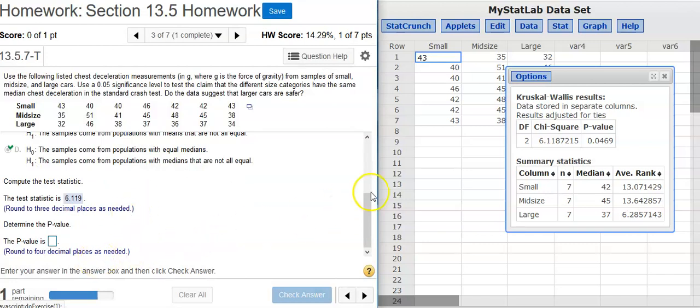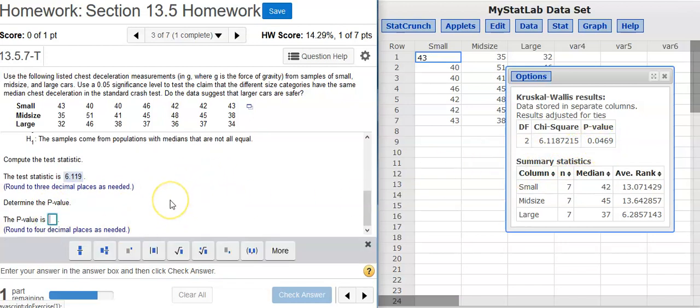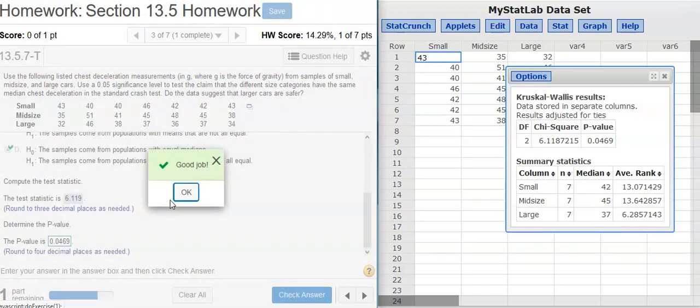The next part asks for the p-value. We've already got that calculated. It's right next door to the test statistic here in the results window. We're asked to round to four decimal places. Good job!